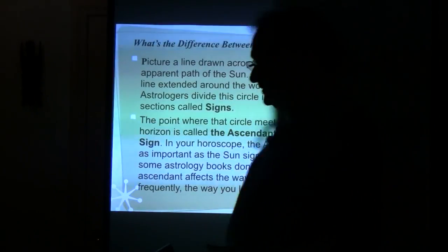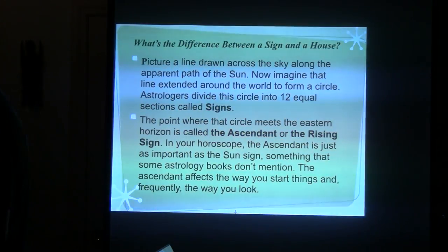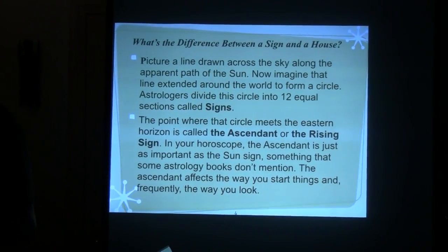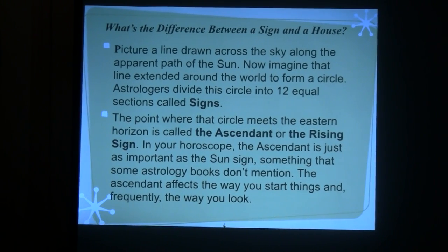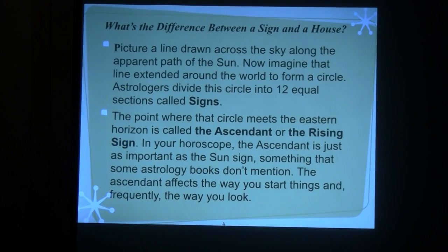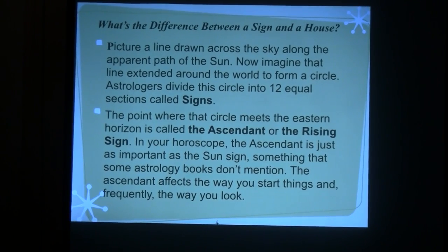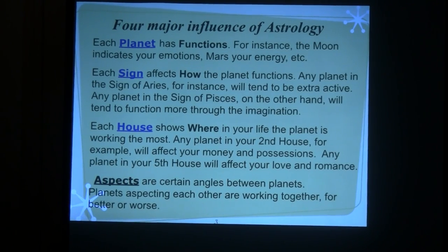It takes two hours for the sun to move through a house. So if you're born at 6 o'clock, let's say you're born at 6, let me do it this way.